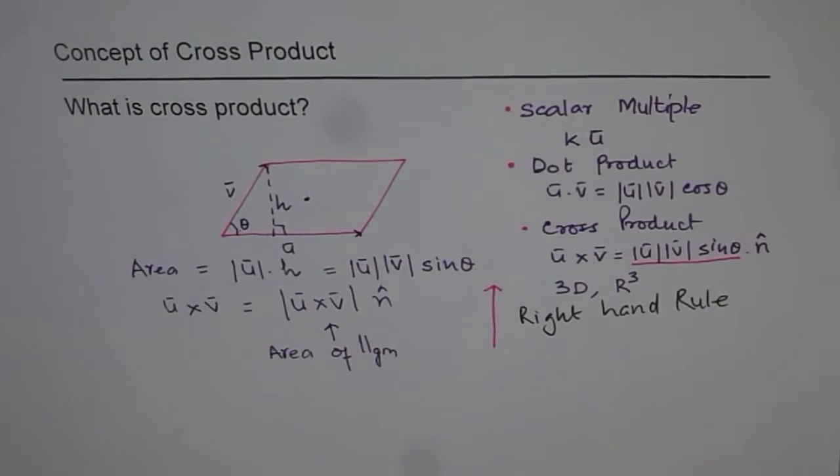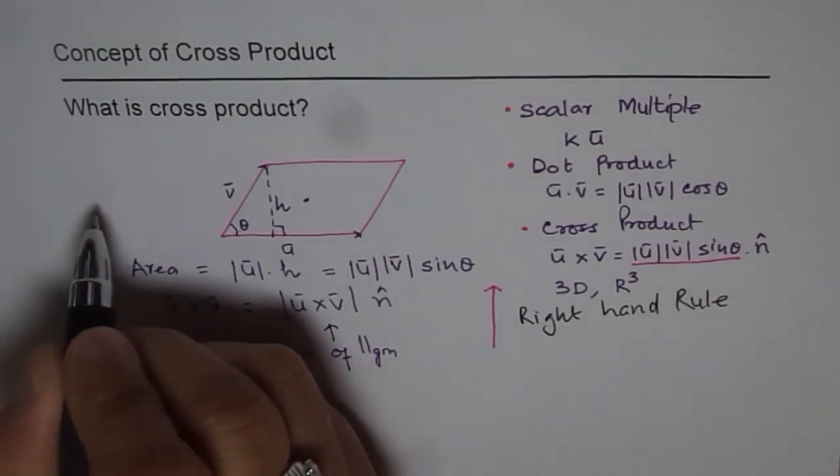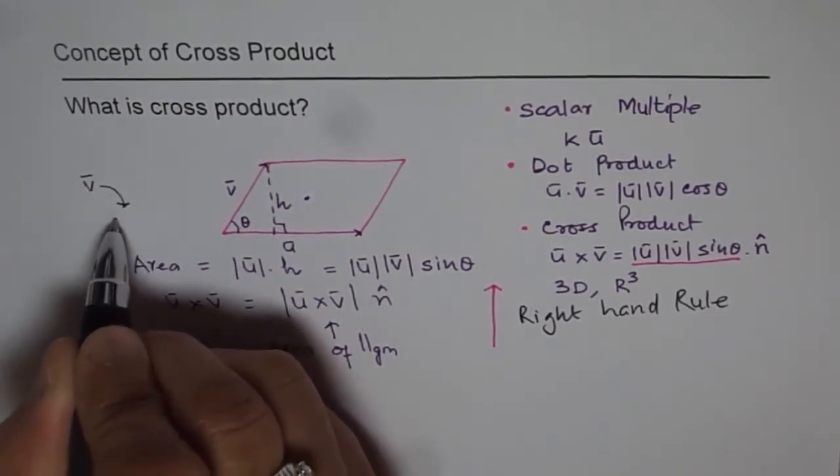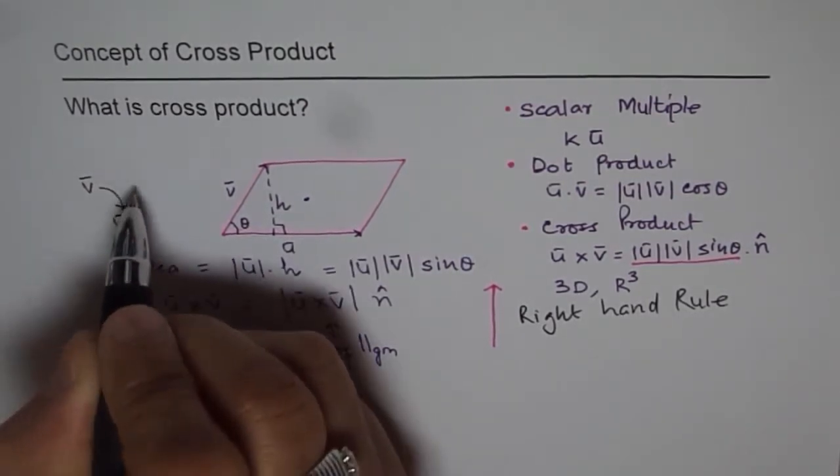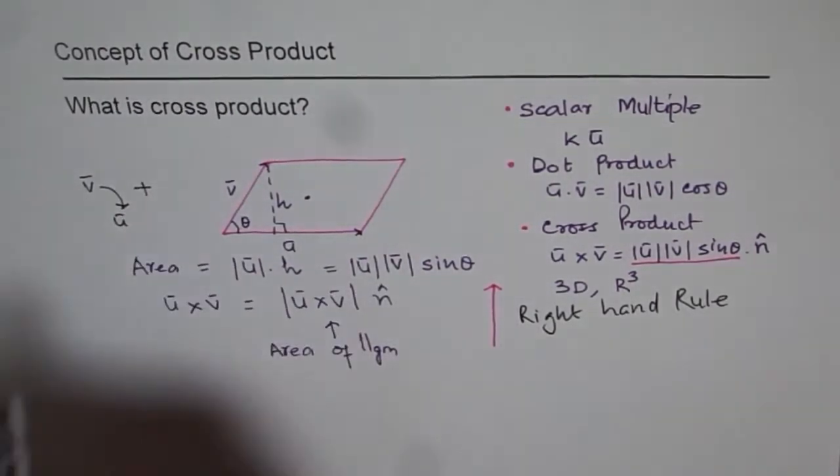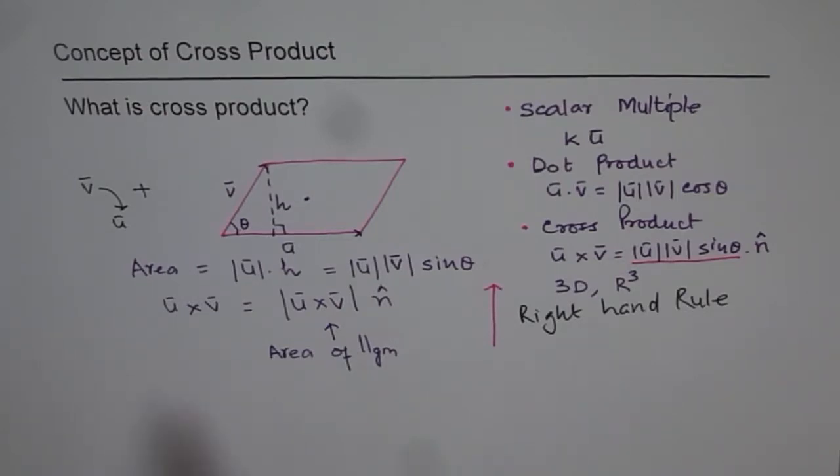But if you do v cross u, it will be like thumb will be pointing downwards. So you can see, the magnitude remains same. Magnitude is same as that parallelogram on the page. But the direction reverses, it now moves downwards. So if I do v cross u, if this is my vector v and u, the magnitude will be same as this parallelogram and I can show my arrow going down. So plus sign for me will denote an arrow shooting downwards, a unit vector. So the direction changes.